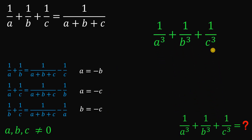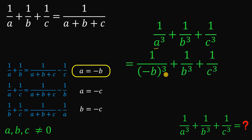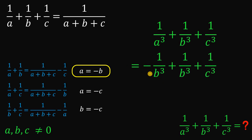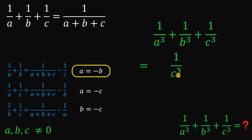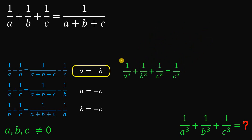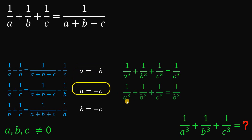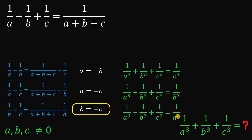In the first case, A equals negative B, so we replace A with negative B. Since 1 over negative B cubed equals negative 1 over B cubed, the negative 1 over B cubed and positive 1 over B cubed cancel to 0. So the answer is just 1 over C cubed. In the second case, where A equals negative C, the value of the expression is 1 over B cubed. In the third case, where B equals negative C, the value is 1 over A cubed.